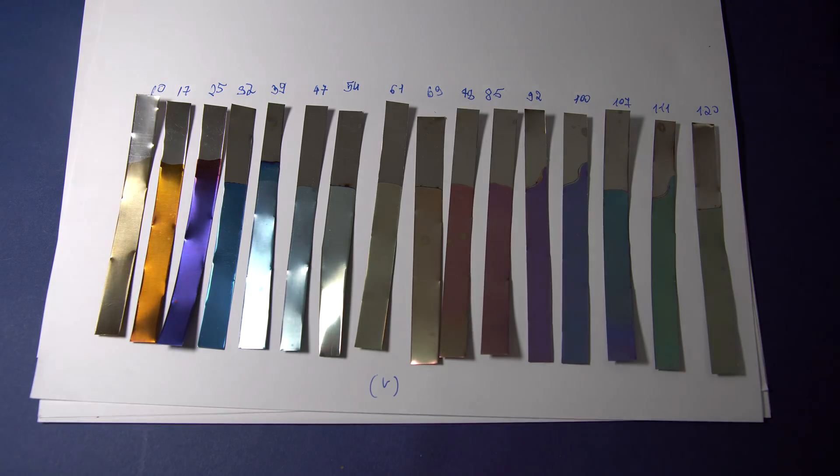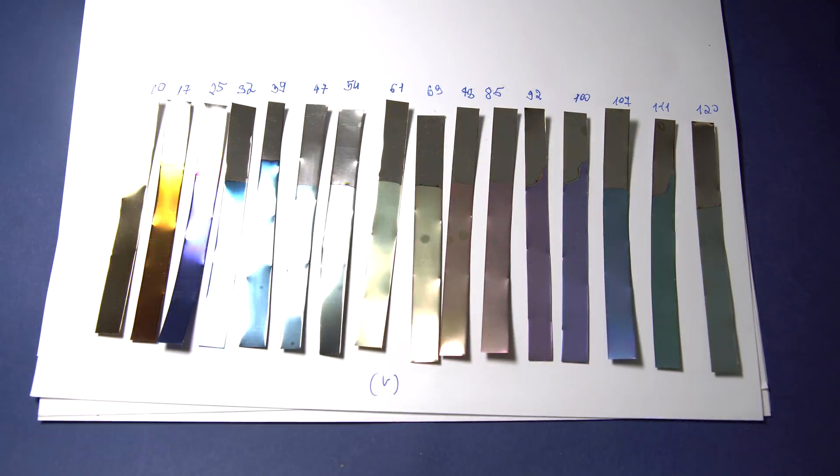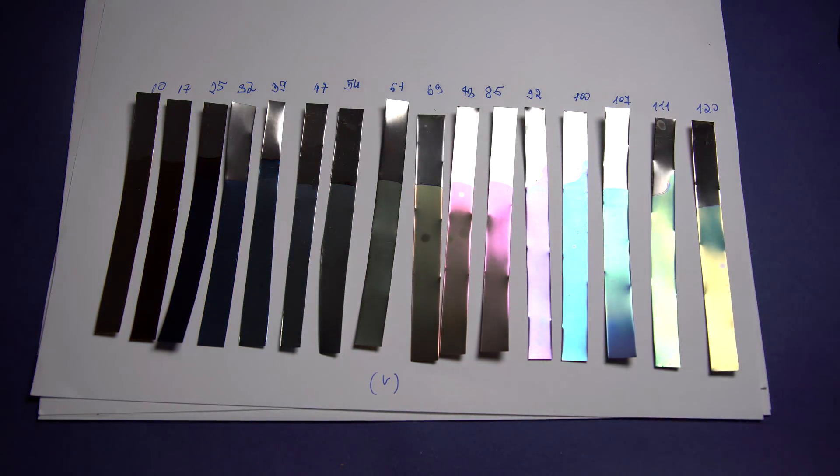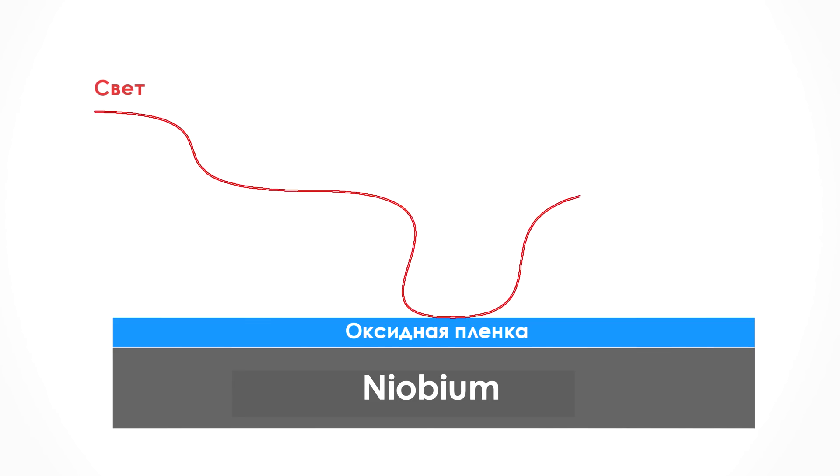The color change happens due to the different thickness of the niobium oxide film on the surface of the metal, and the color we see is based on the light reflected from the metal and light that has passed through the oxide layer.